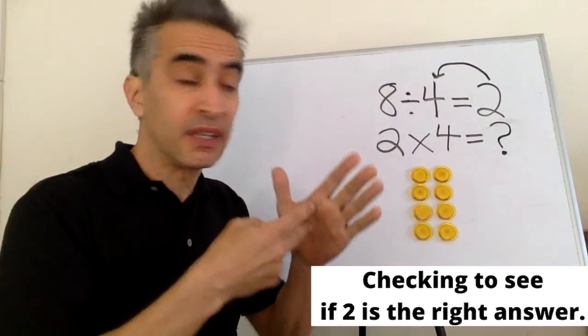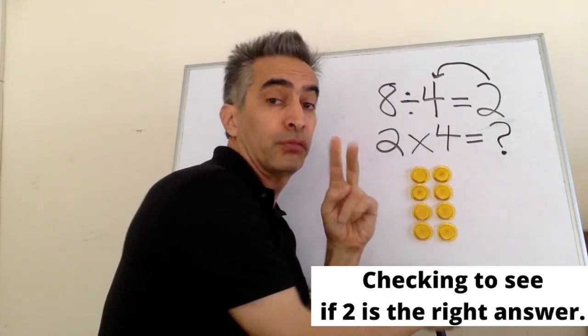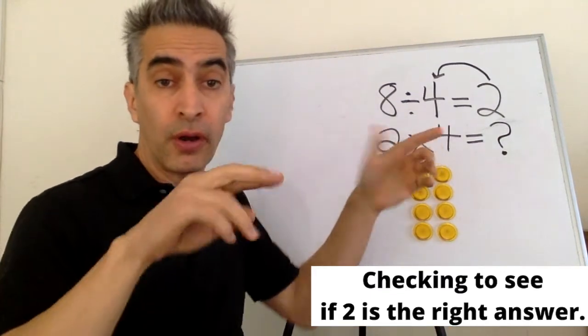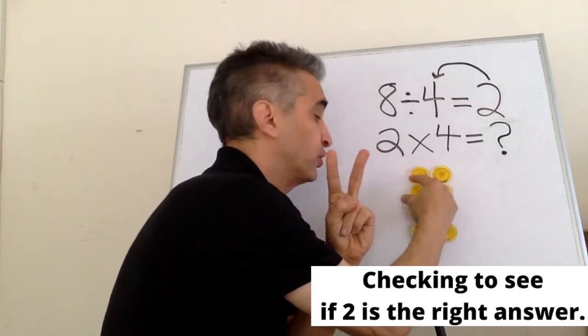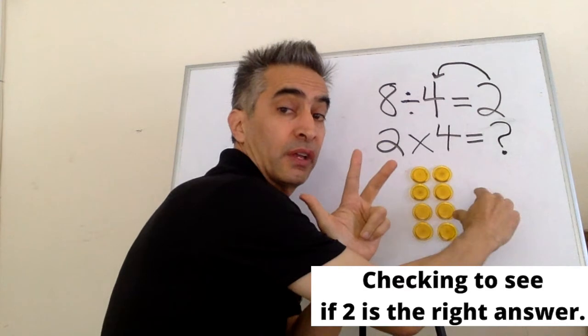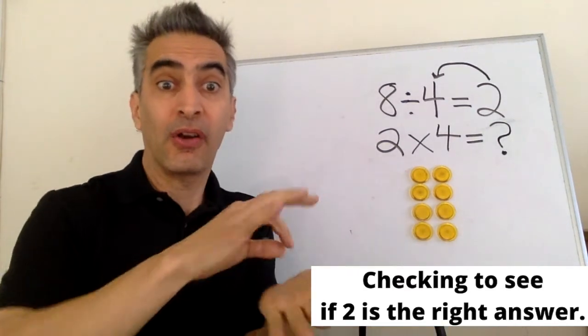This two means two columns. This four means one, two, three, four rows. Now, count.